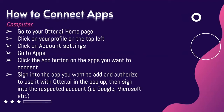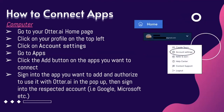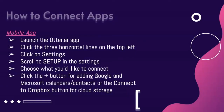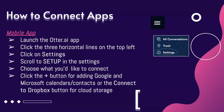Sign into the app you want to add and authorize it to use with Otter.ai, then sign into the respective account. To connect on the mobile app, launch the Otter.ai app, click on the three horizontal lines on the top left, click on Settings, scroll to Set Up in the settings, choose where you would like to connect, and click the plus button for adding Google and Microsoft calendars or contacts, or the Connect to Dropbox button for cloud storage.